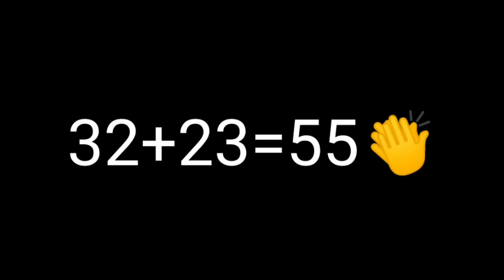Here is another quick example: starting with the number 55. We can read 55 backward and forward the same, so 55 is already a palindromic number.